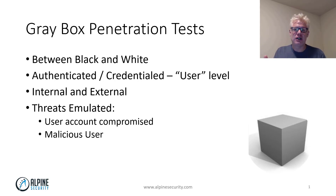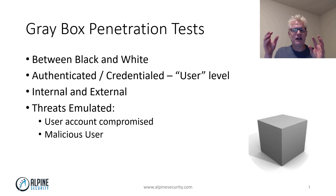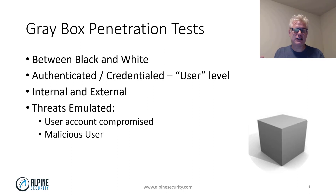With white box, you know quite a bit about the target. You may have access to the network diagram, schematics, design documents, source code, administrator-level access, etc. So black box gives pretty much little to no access, gray is in the middle, then white. With gray box, you have authenticated or credentialed user-level access to the system.